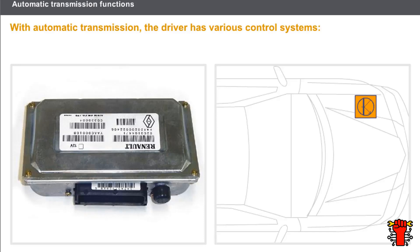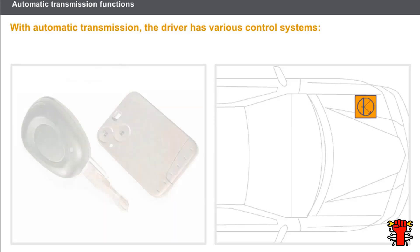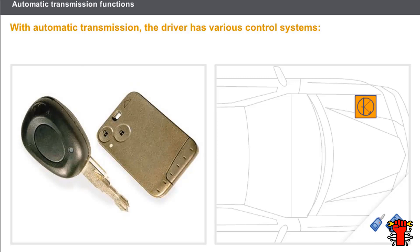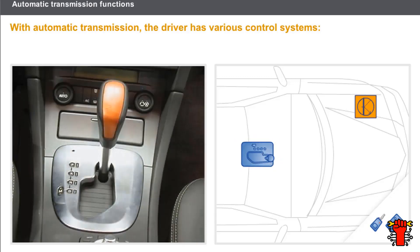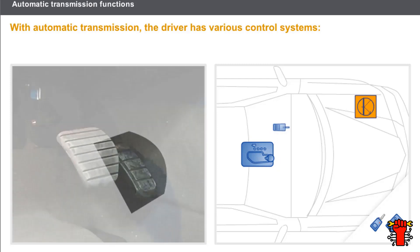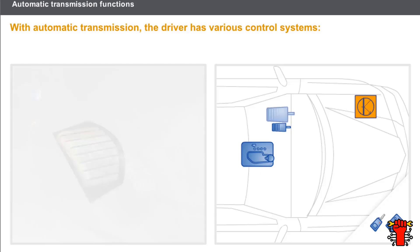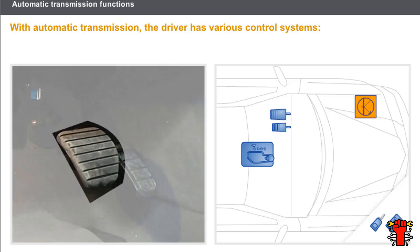With automatic transmission, the driver has the following control systems: a key or card used to switch on the system's electrical components; a lever for selecting the gear ratio and driving mode; an accelerator pedal whose position enables the computer to determine the driver's driving style and control gear changes; and a brake pedal which sends the stop signal to the computer to manage various functions such as unlocking the gear lever.